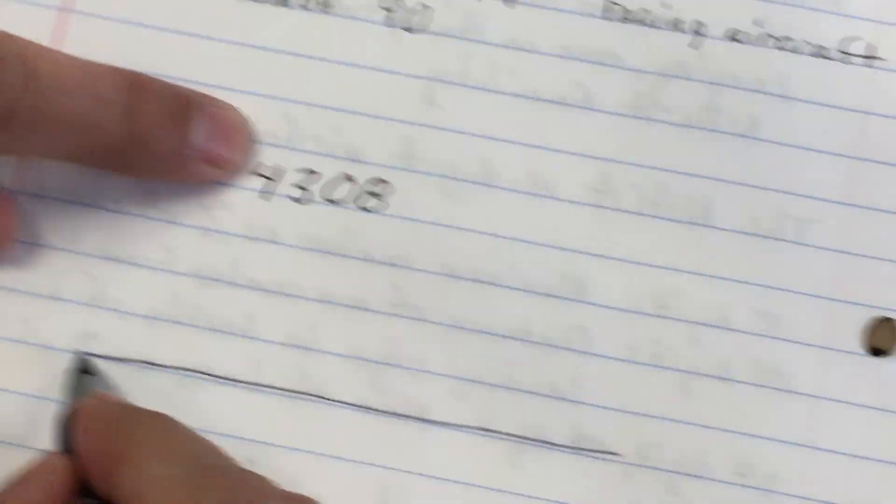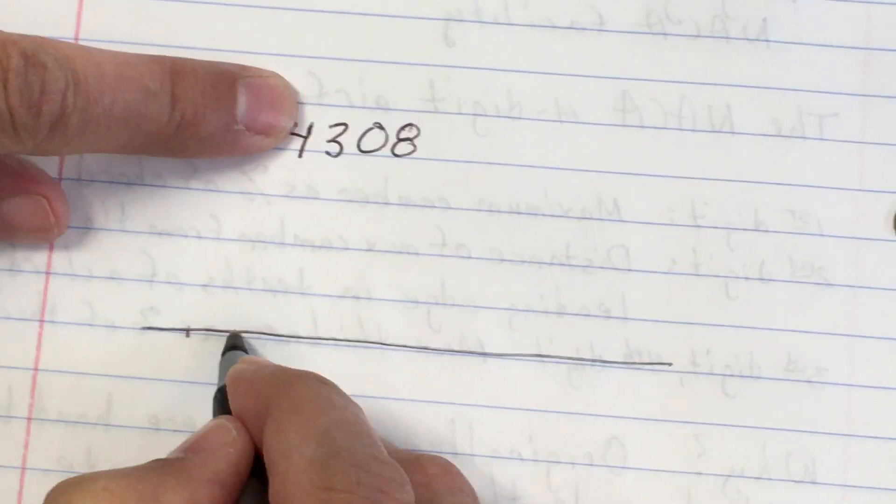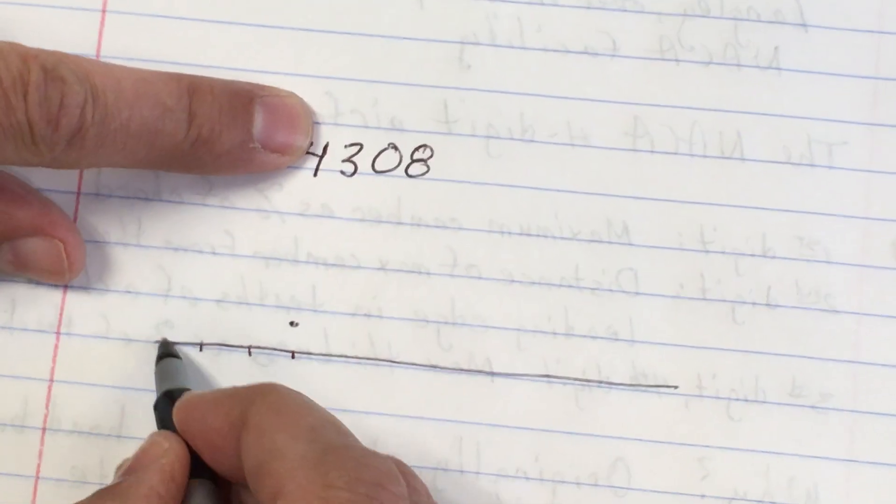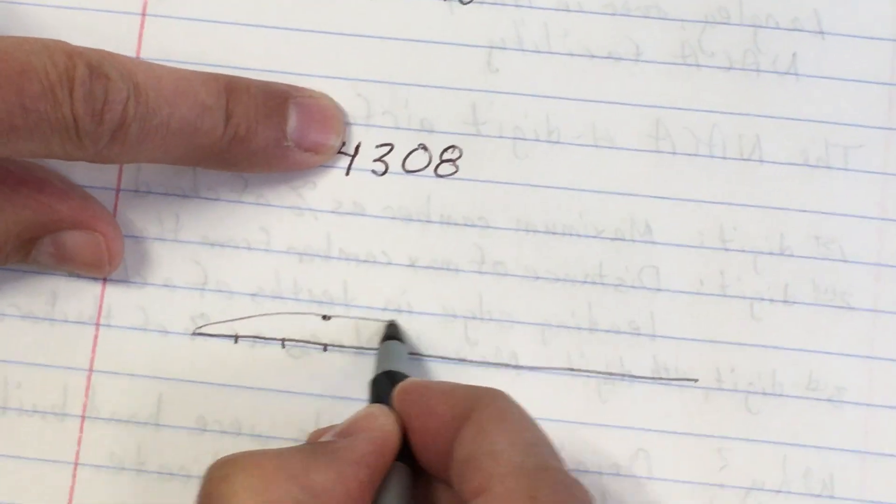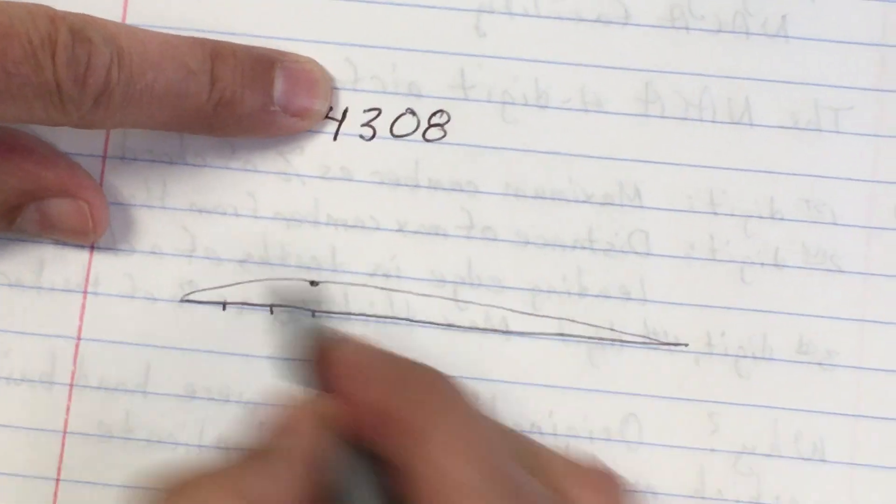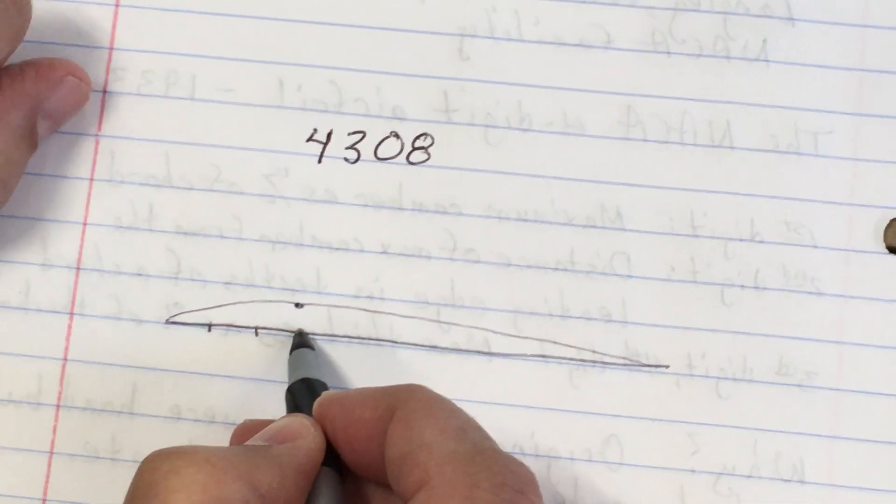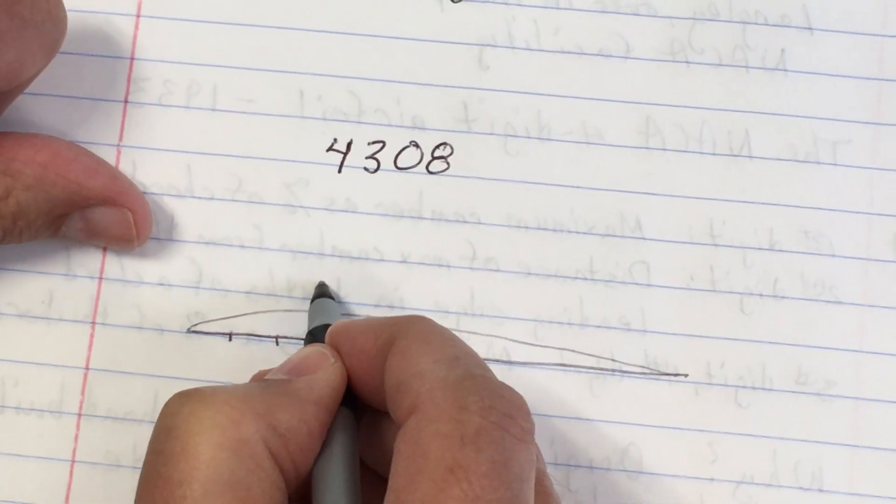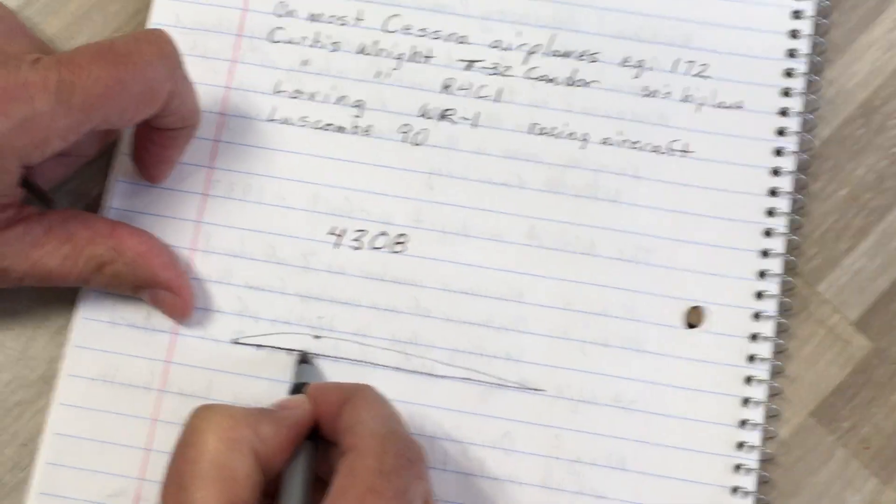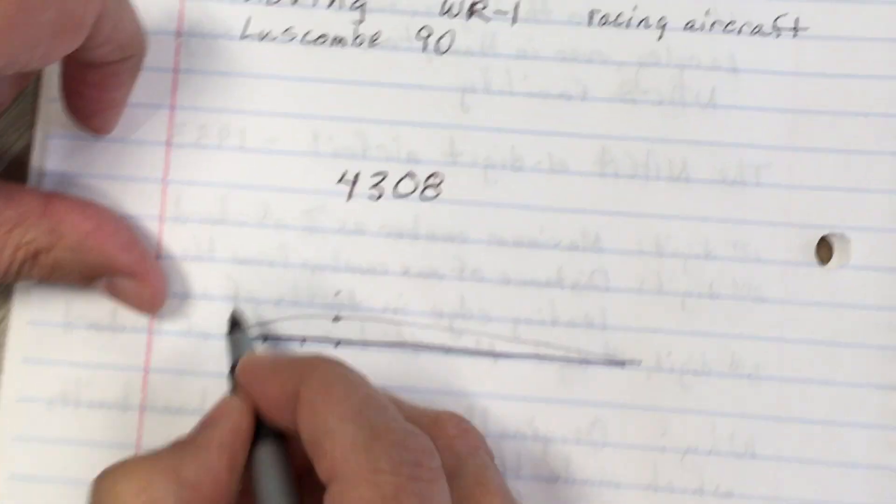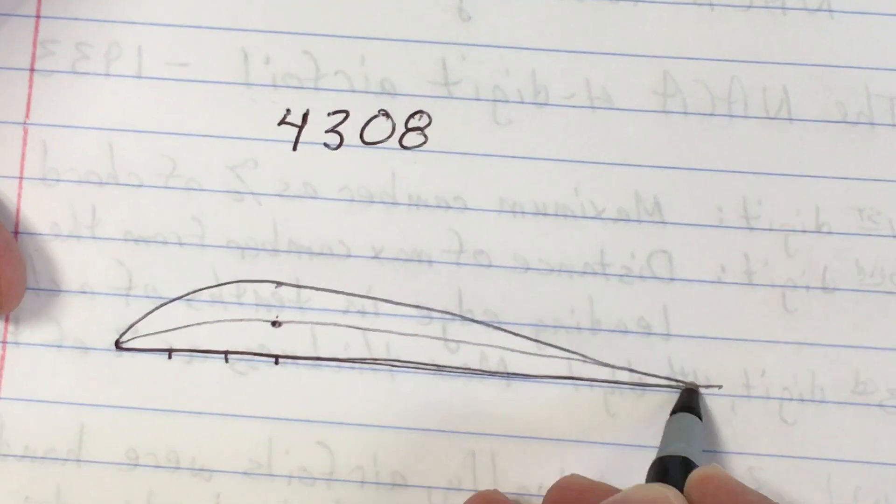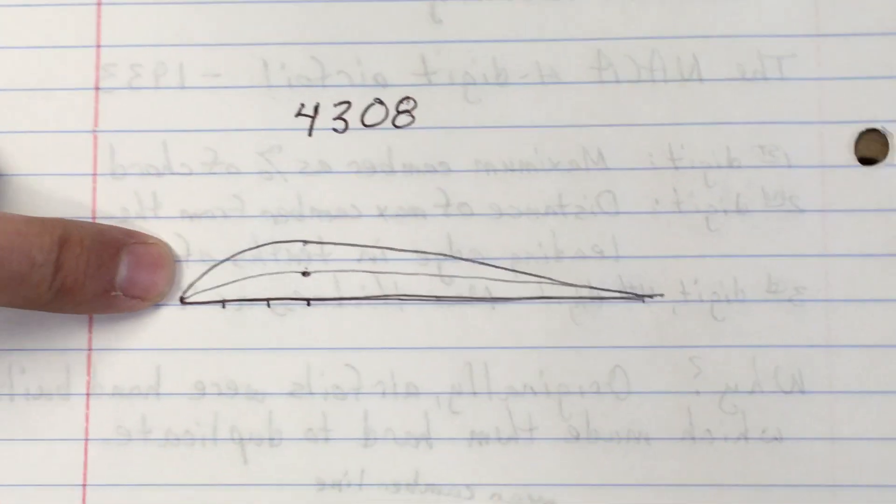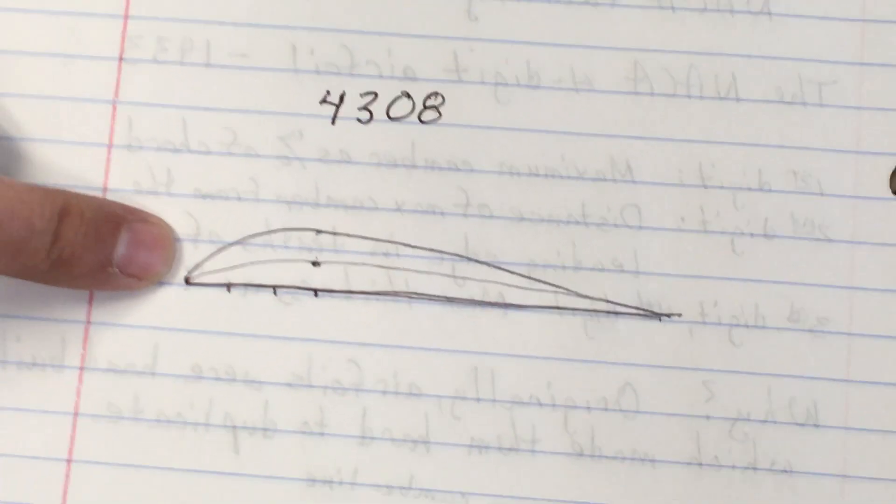So if you pick yourself a 4308, let's think about this: four percent camber at the thirty percent mark. One, two, three - four percent camber. This thing has a lot of curve to it, look at that. And then but it's only eight percent thick, and that's already four percent, so four percent up, four percent down. This thing's flat on the bottom, look at that.